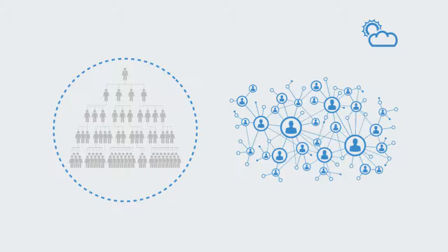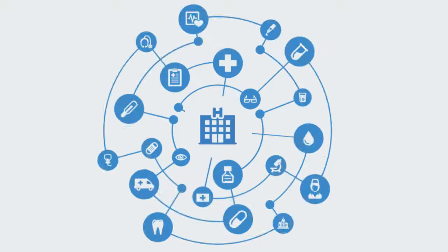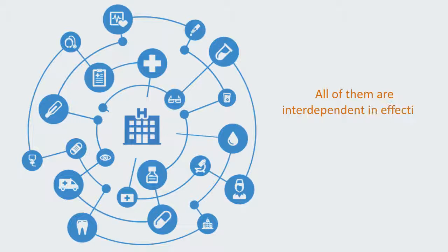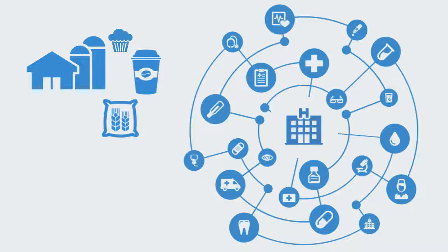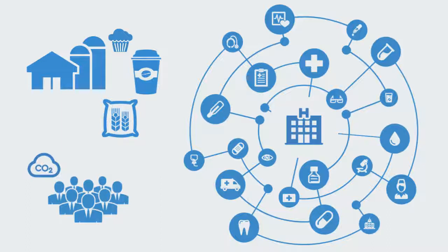Think about a healthcare system. It is a complex network of many different organizations and individuals — from primary care practitioners, to hospital administration, to government agencies, to universities and so on. All of them are interdependent in affecting the outcome to the system. The boundaries are fuzzy and even non-existent. For example, would we include the food companies in this organization, as what they produce clearly has a direct impact on people's health?